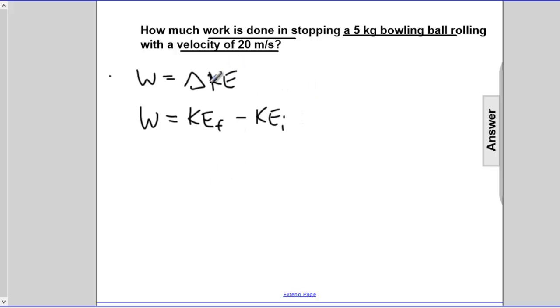And since it's stopping, the final KE is 0. Let's see why. Work is the final kinetic energy, ½ m vf², minus the initial KE, ½ m vi². And since it's stopping,